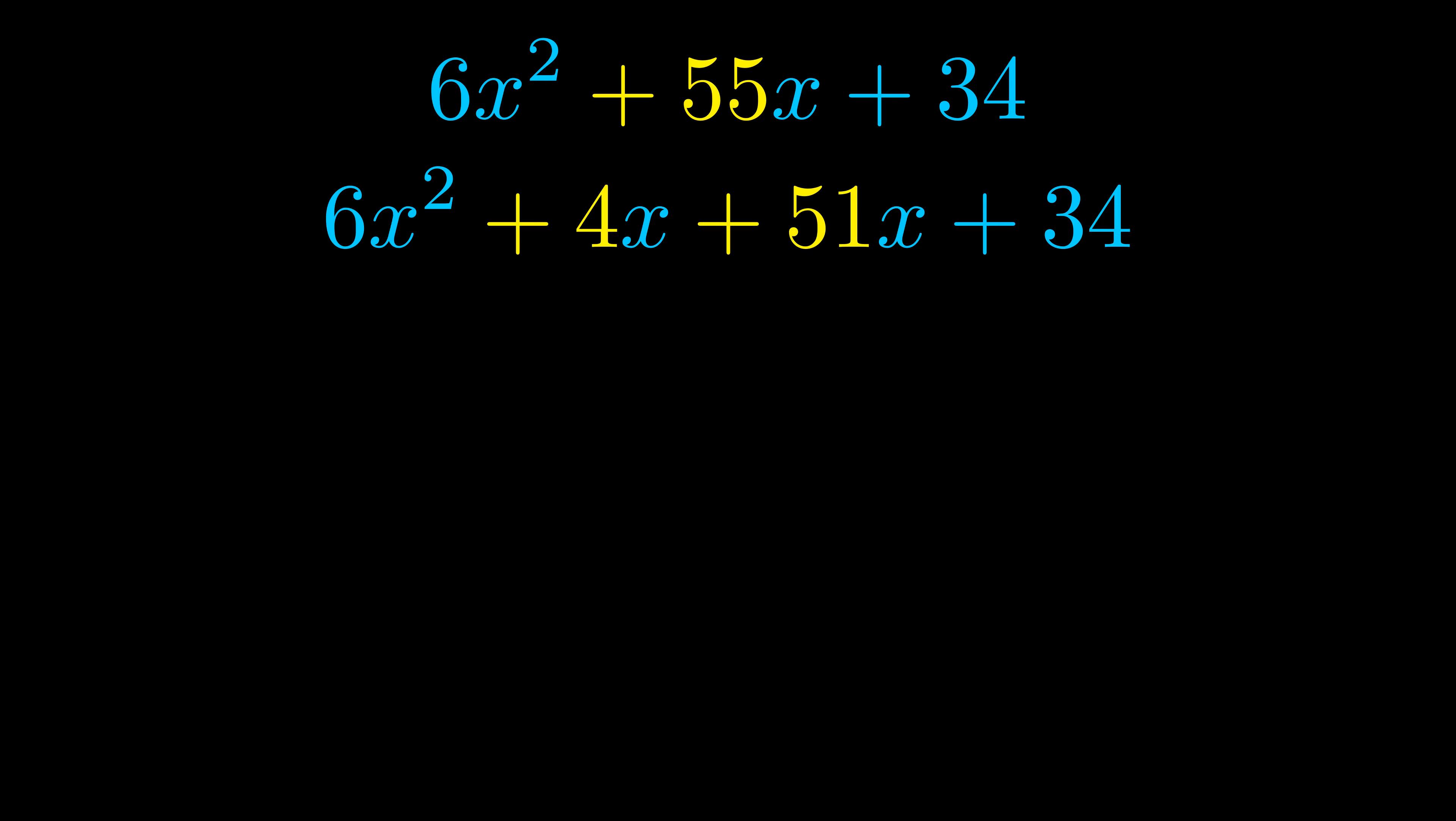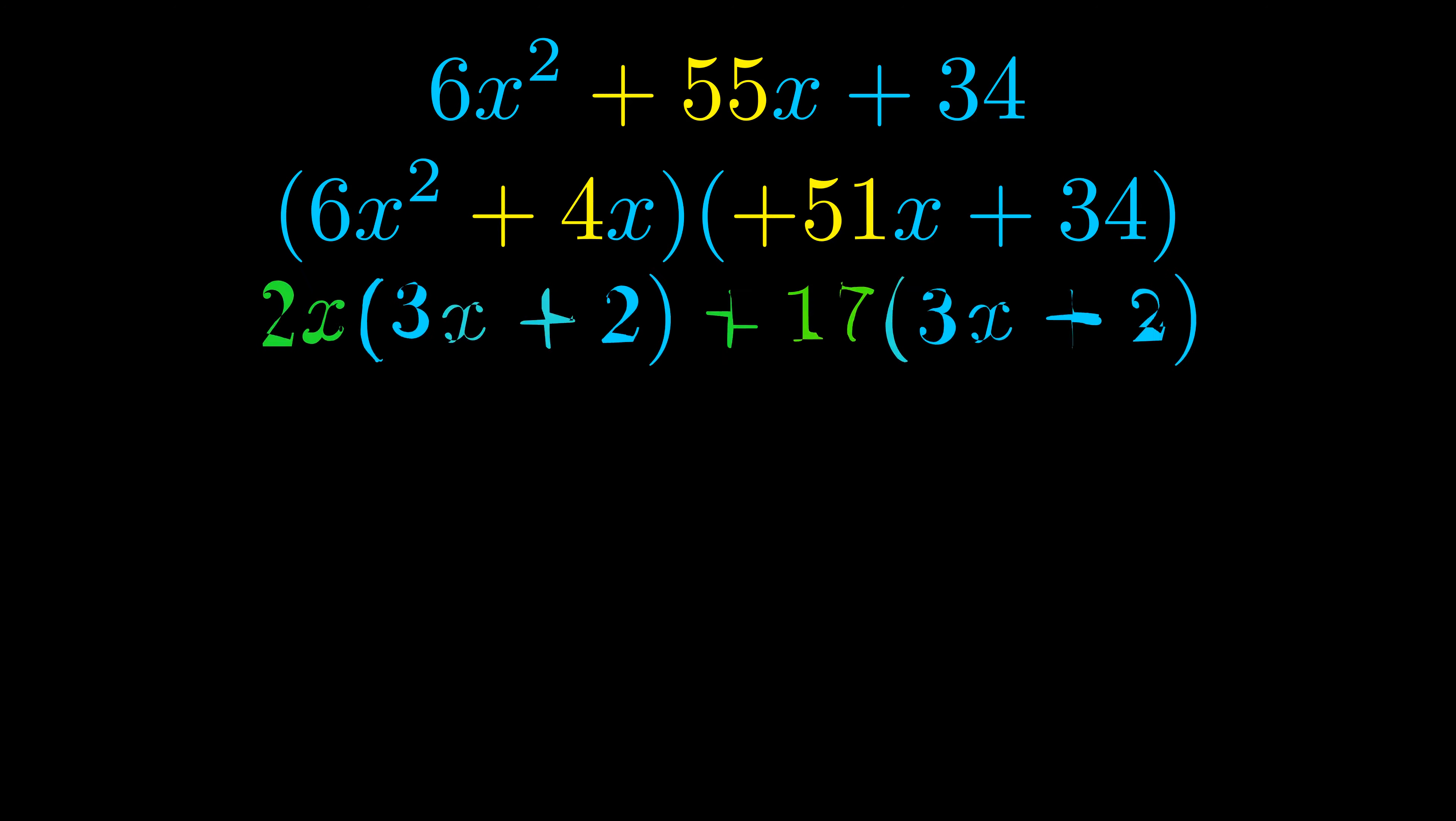Once we've done this, we go ahead and put parentheses around the first term and last term. And we do that so that we can take the greatest common factor out of both terms. We can see the greatest common factor is now outside in green.